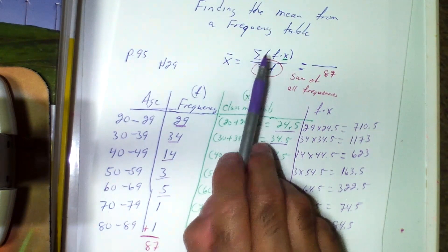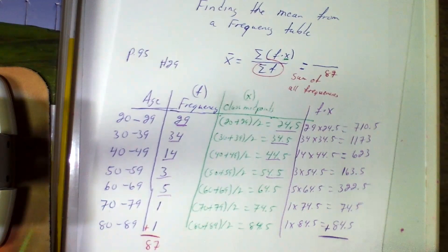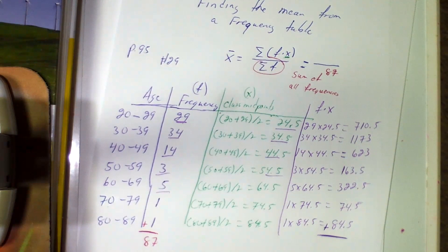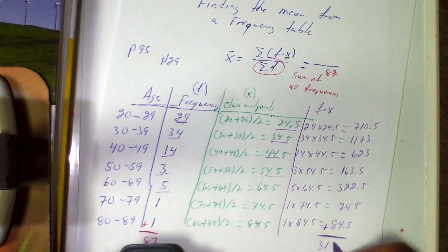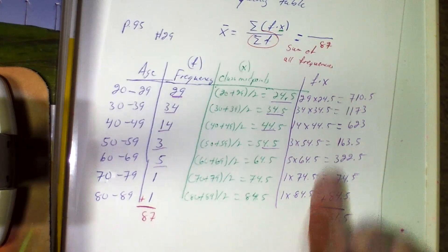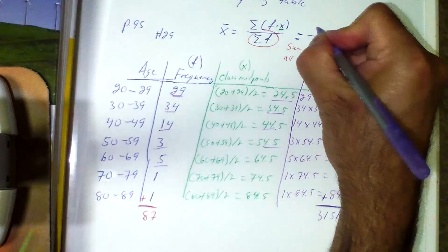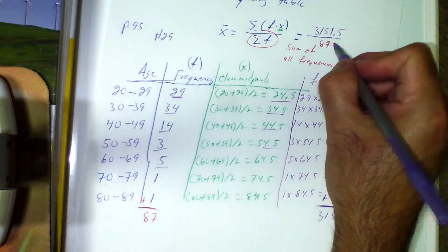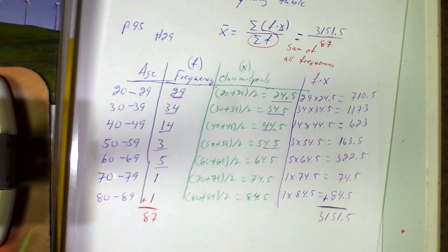So now I did my parentheses. So now I can do the outer part of it, which means the sum. So I'm going to add this column, and that sum will go above the 87. So let me add them up: 710.5 plus 1173 plus 623 plus 163.5 plus 322.5 plus 74.5 plus 84.5. So I get 3151.5. And that number will go right above the 87. And now I'm going to divide 3151.5 by 87.